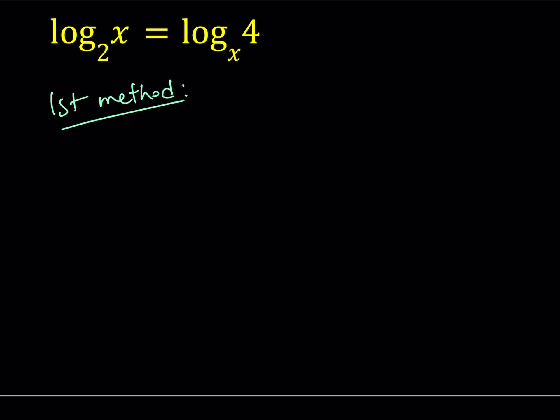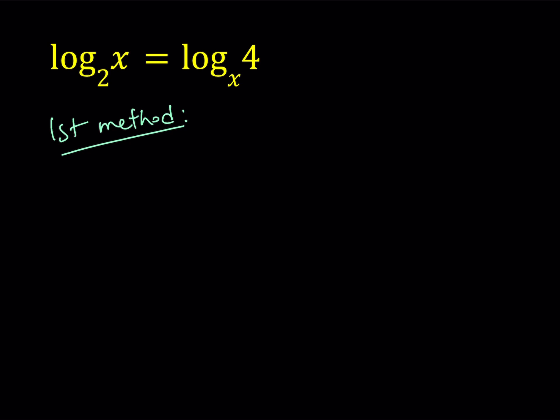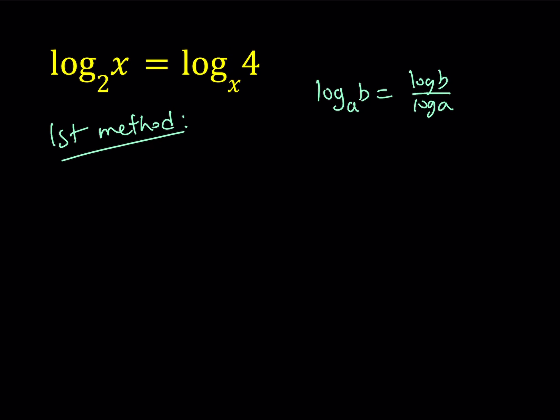I'm going to be using the change of base formula. As you know, if you have log b with base a, you can write it as log b over log a in any base. You can use base 10, you can use ln, pretty much anything you want. In this case I'm going to use base 10, which is log, so I'm going to write this as log x over log 2 equals log 4 over log x.